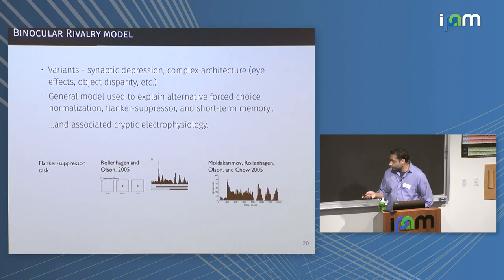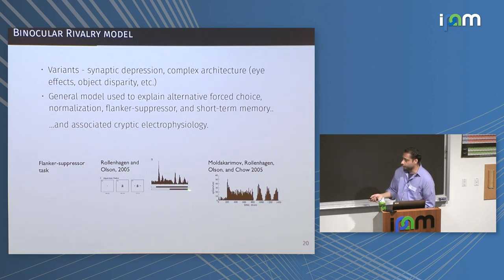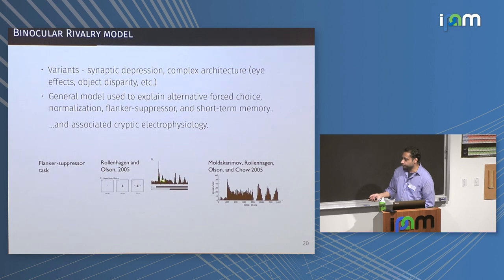This model has actually been used for lots of applications — it's the basic model for winner-take-all and decision-making as well, with mutual inhibition and a threshold. It also explains what I call cryptic or covert electrophysiology. For example, in a flanker-suppressor task, you record from a neuron that likes a particular image, you turn it on and get a spike of activity, then show the suppressor and end up getting this 5-hertz decaying oscillation in the data — and you can show that the model also produces this.